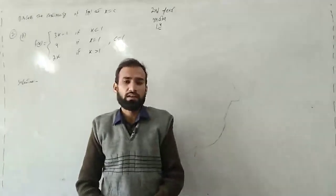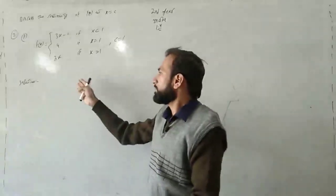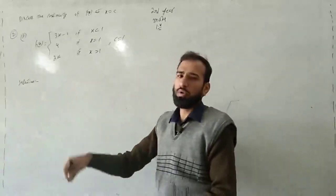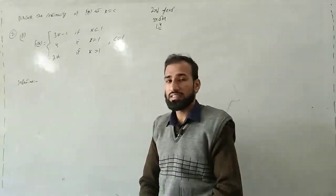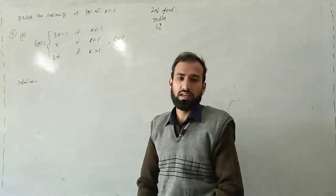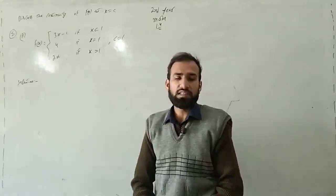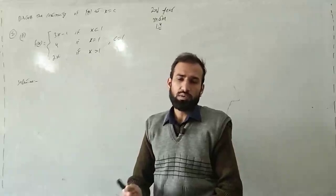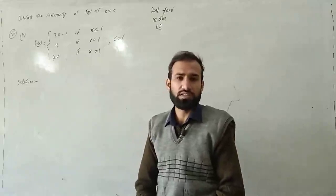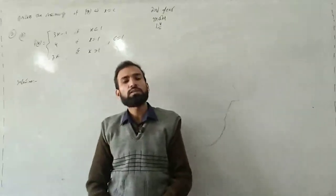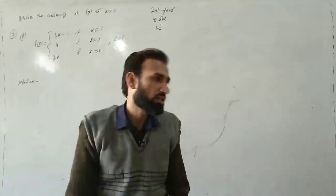Wo conditions teen hain. Pehli condition: function jo hai wo defined ho — jis point pe humne continuity check karni, us point pe function ka define hona shart hai. Doosri: limit exist karni chahiye — left hand limit aur right hand limit dono equal hon. Teesri condition: function ka answer aur limit ka answer us point pe same hona chahiye. Tab hum kahenge, this function is a continuous function. Agar in mein se koi ek condition bhi satisfy na hui, tab wo function continuous nahi hoga.